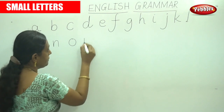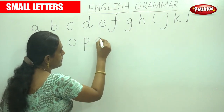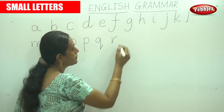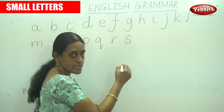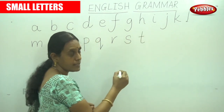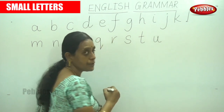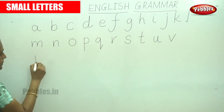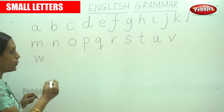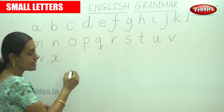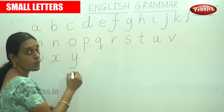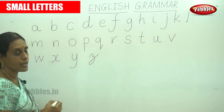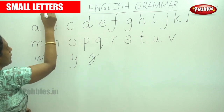Okay, P, Q, R, S, T, U, V, W, X, Y, Z. Okay, these are small letters.